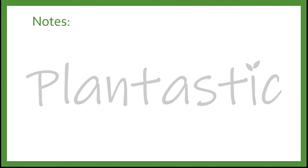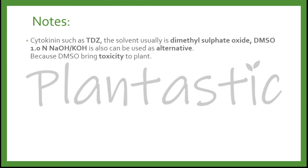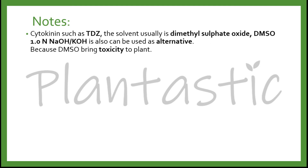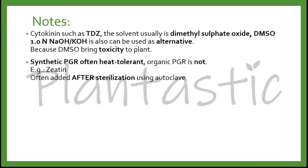Here are some notes on the stock and working solution preparation of PGR. For example, the cytokinin TDZ — there is a solvent such as dimethyl sulfoxide (DMSO). Instead of using that, you can use 1.0 normality NaOH or KOH (sodium hydroxide or potassium hydroxide) as an alternative, because DMSO is toxic to the plant. You also have to check whether it is a synthetic PGR or organic PGR, because synthetic PGR is often heat tolerant, but organic PGR is not. For example, zeatin — in this case, we often add the zeatin stock solution after the sterilization process using autoclave, which is known as filter sterilization.